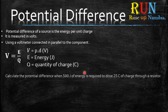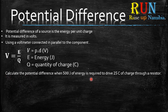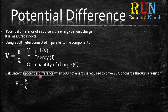Let's take a look at an example: calculate the potential difference when 500 joules of energy is required to drive 25 coulombs of charge through a resistor. The first thing you want to know is what you are asked to calculate — in this example, you are asked to calculate the potential difference.